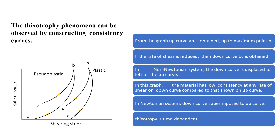Looking at the graph, the up curve AB is obtained for both plastic and pseudo plastic materials, reaching a maximum point B. If the rate of shear is then reduced, the down curve BC is followed. BC is not superimposable on BA; rather it is displaced to the left-hand side. The material shows lower consistency at any rate of shear on the down curve compared to the up curve.